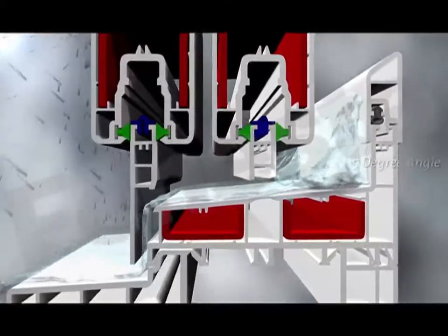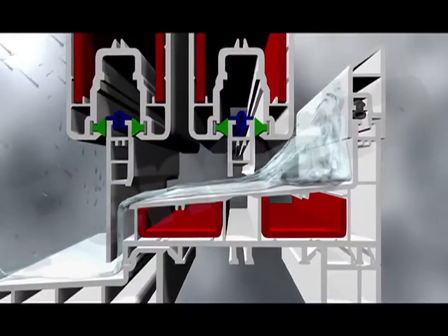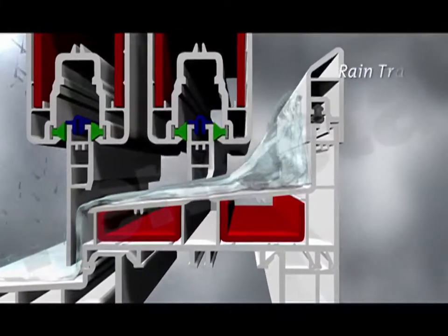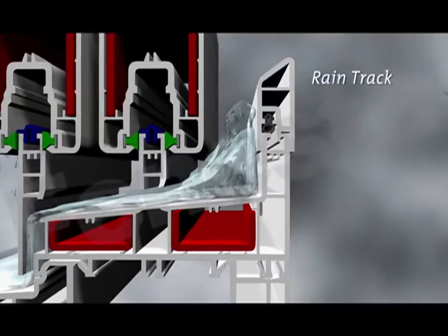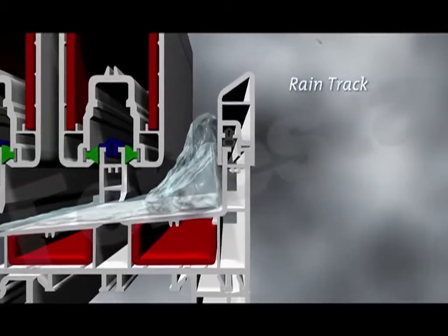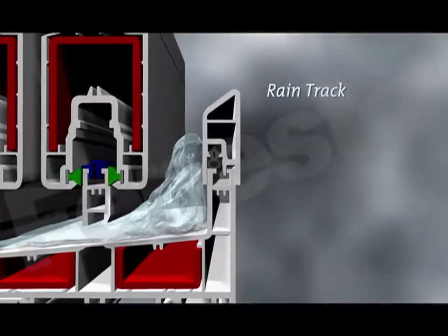In areas that experience heavier showers, Fenesta sliding windows come with a special rain track, a simple dam-like system that blocks rain completely and prevents it from seeping indoors.